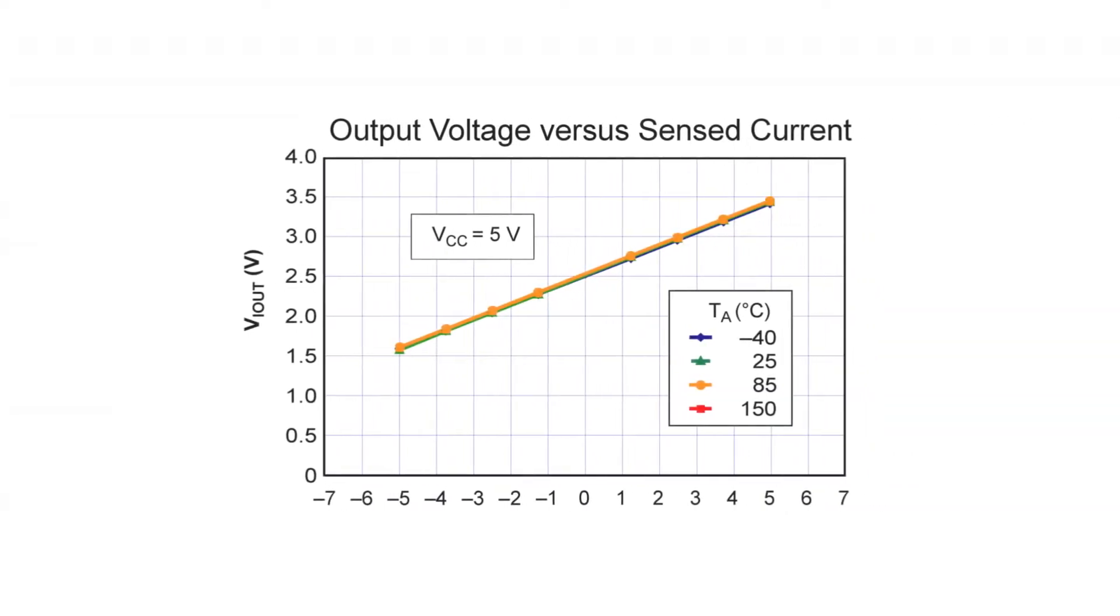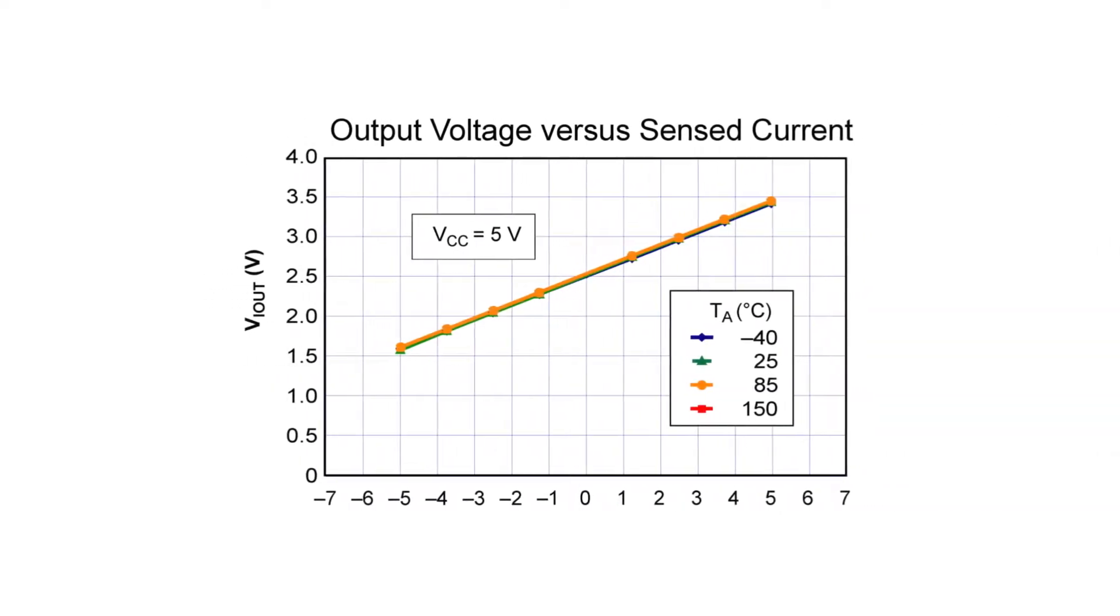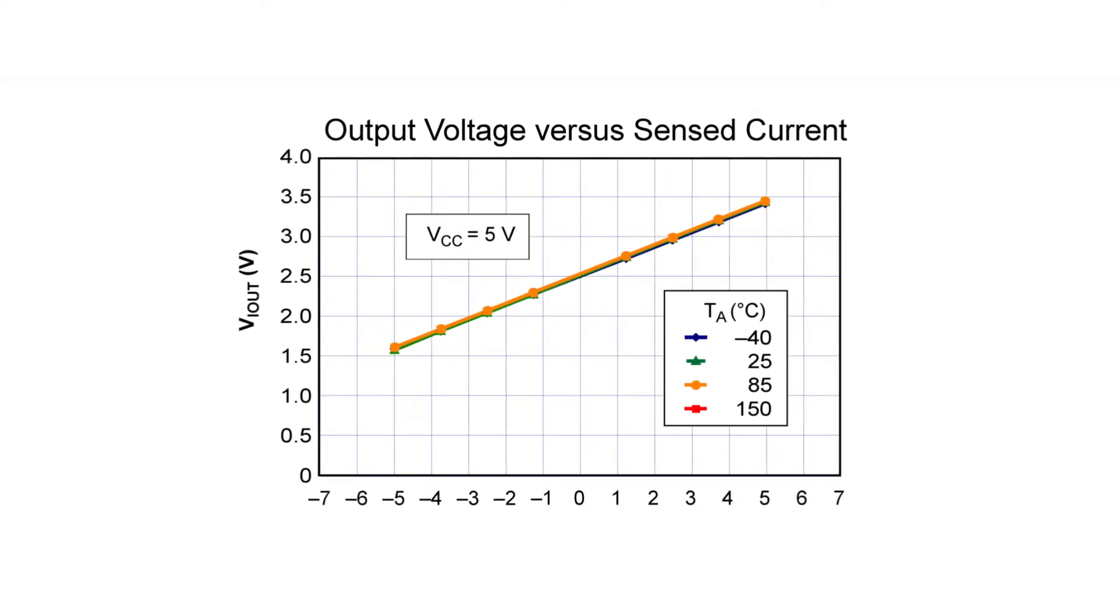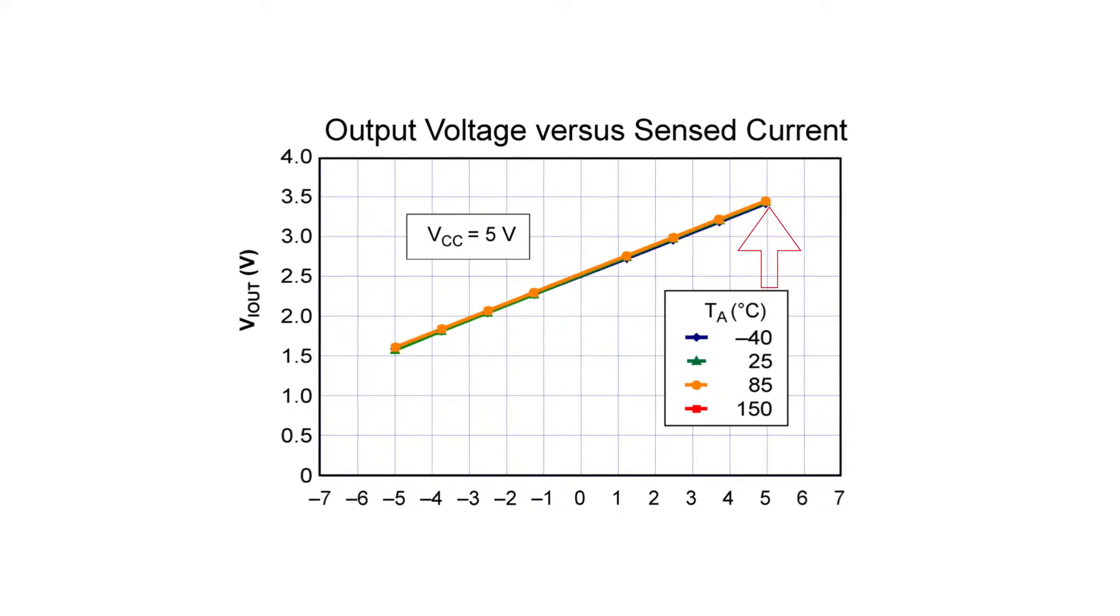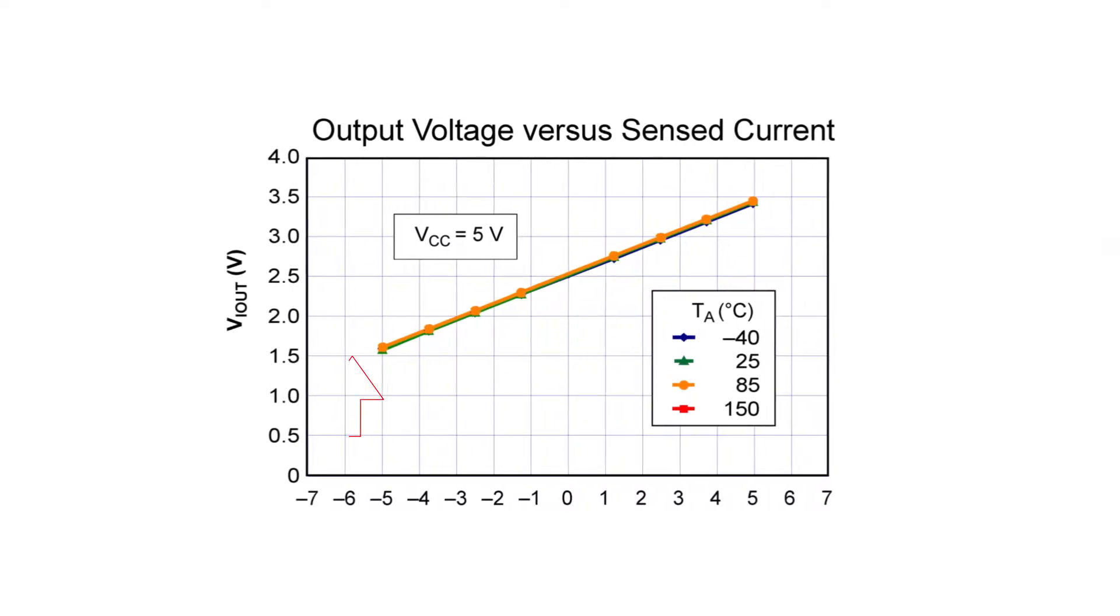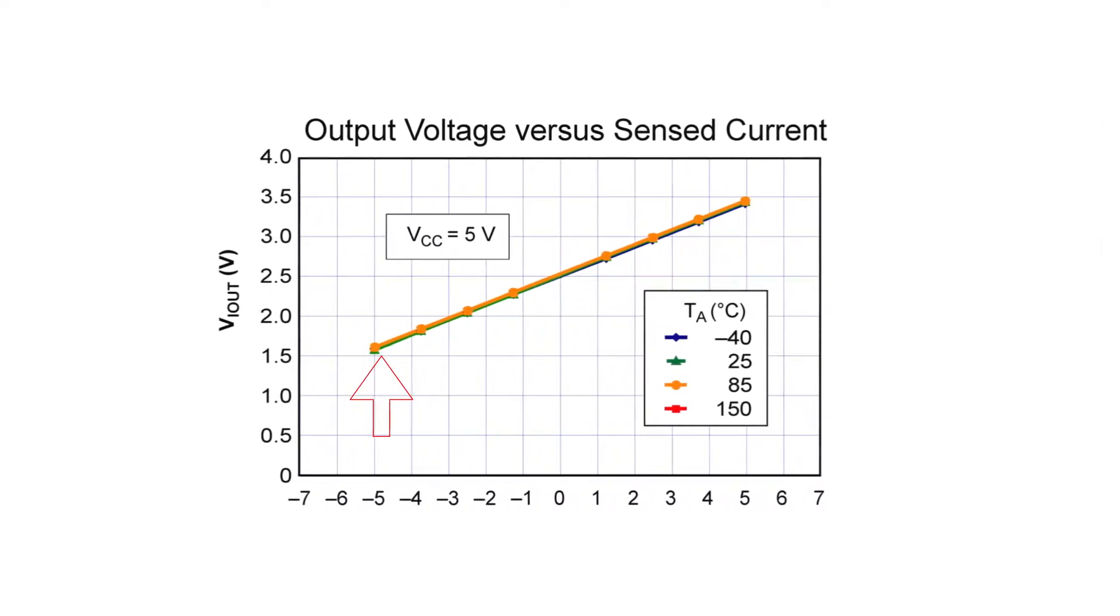Now let's take a look at the output voltage versus sensed current graph. We see that when there is no current passing through it, the output voltage is 2.5 volts. As soon as current starts increasing, the output voltage starts increasing and finally reaches 3.5 volts for positive 5 amperes and reaches 1.5 volts for negative 5 amperes.